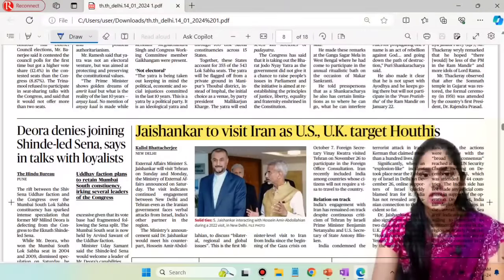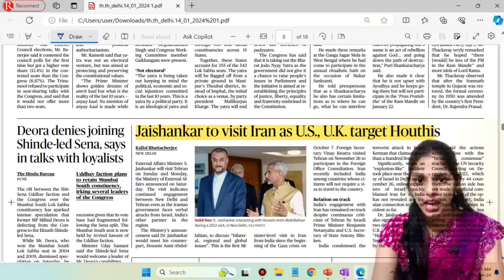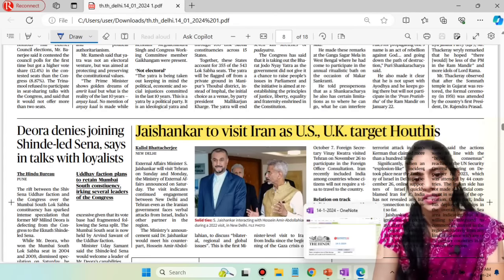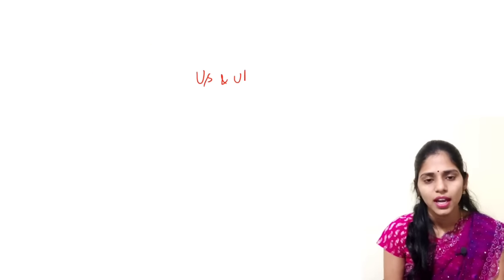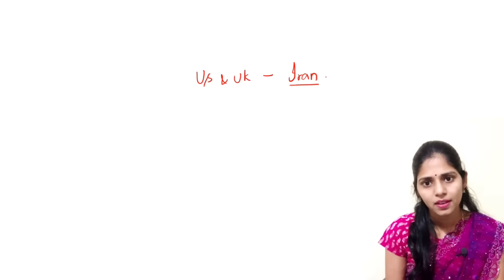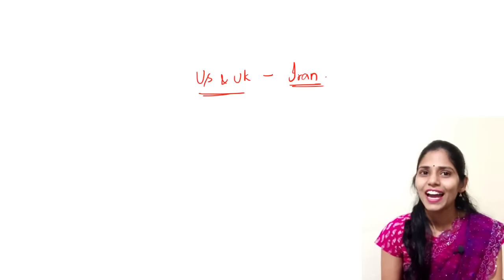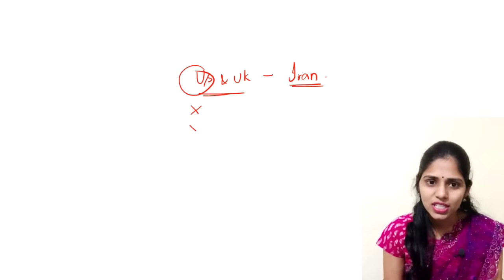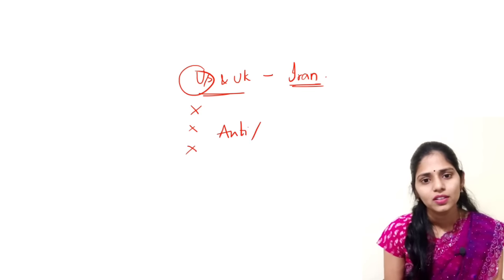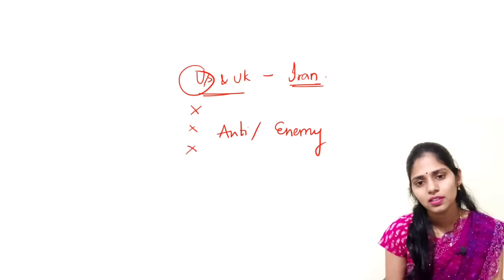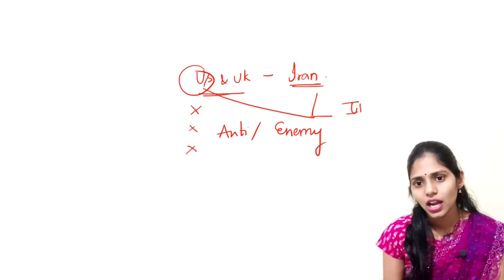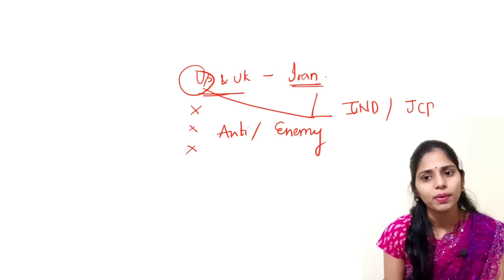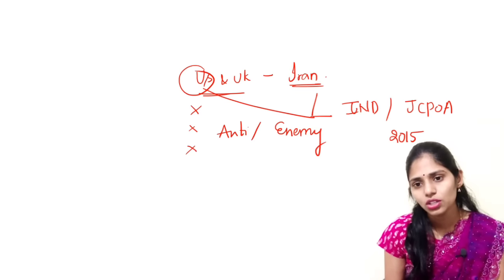Moving to the next article: 'Jaishankar to visit Iran as US-UK target Houthis.' We already discussed this topic in yesterday's class. The background here is that the US and Iran are enemy countries. The deal between the US, Iran and some other countries is Iran's nuclear deal, or Joint Comprehensive Plan of Action (JCPOA), which came in the year 2015, but the US came out of this JCPOA.